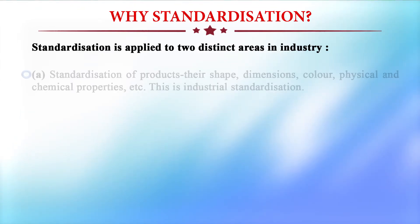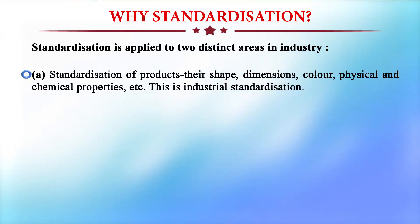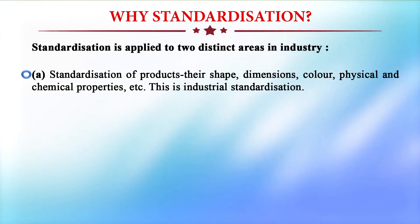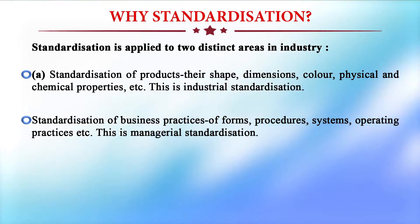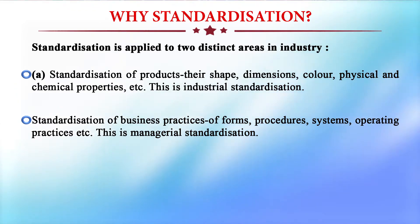Standardization is applied to two distinct areas in industry. First, standardization of products — their shapes, dimensions, color, physical and chemical properties, etc. This is industrial standardization. Second, standardization of business practices — forms, procedures, systems, operating practices, etc. This is managerial standardization.